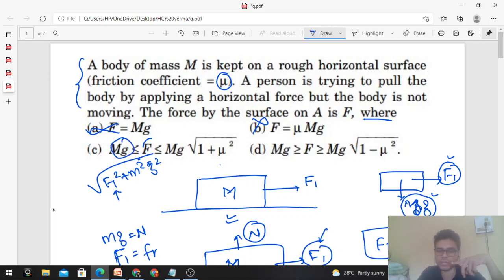Is F greater than Mg? Of course, F's value is greater than Mg because F1 also has a component. But less than or equal to Mg√(1 + μ²). We discussed that F's maximum value will be Mg√(1 + μ²). F is less than Mg? No, F is greater than Mg. So option D is also wrong. Option C is correct.